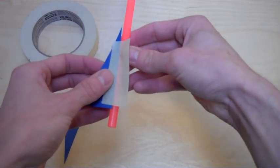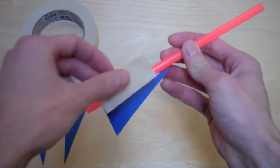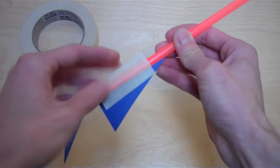When you attach the fins, leave about half an inch of the straw exposed at the bottom. Use another piece of tape to keep the fin from wobbling around during flight.